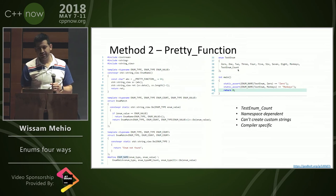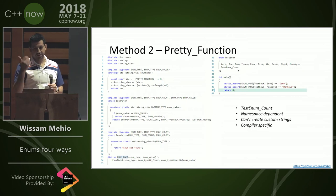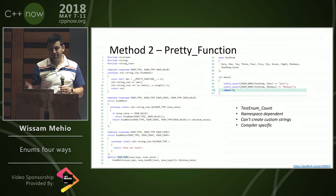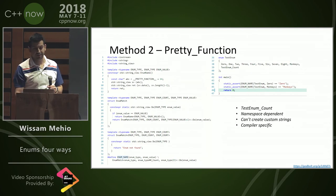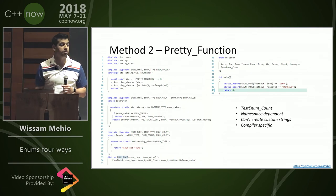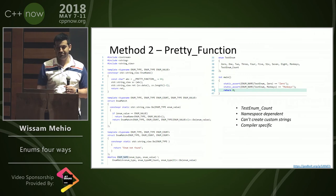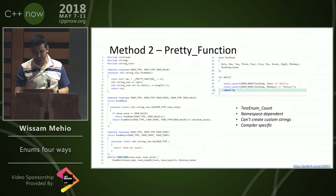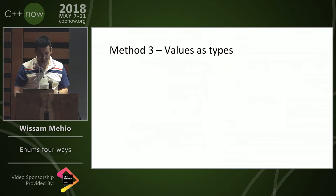Also, Method 2 is really namespace-dependent and compiler-dependent. Hook up a separate compiler and you'll get different results.